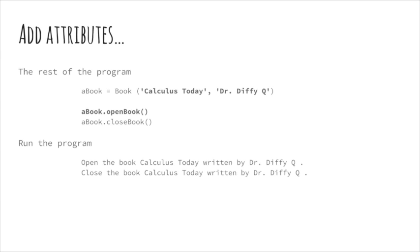The results when the program is run are the same as before: Open the book, Calculus Today, written by Dr. Diffie Q. Close the book, Calculus Today, written by Dr. Diffie Q. The initializer method defines the parameters required when the object is created and requires the self parameter. The self parameter is used to create and initialize the attributes booktitle and bookauthor that are the attributes for an instance of the Book class.